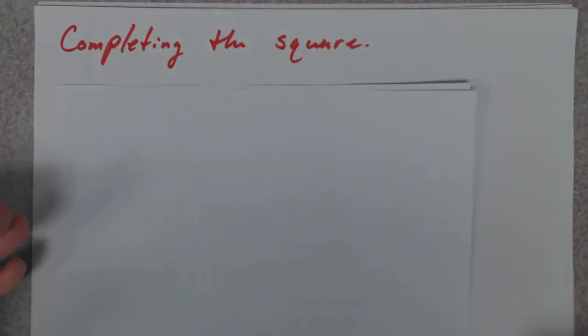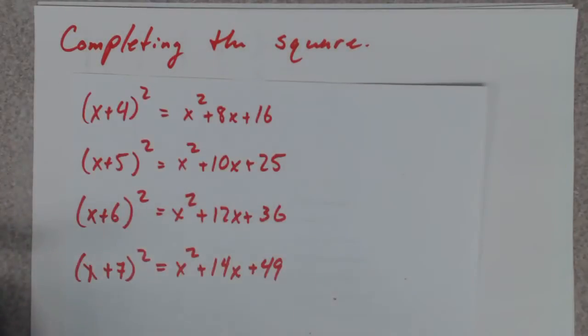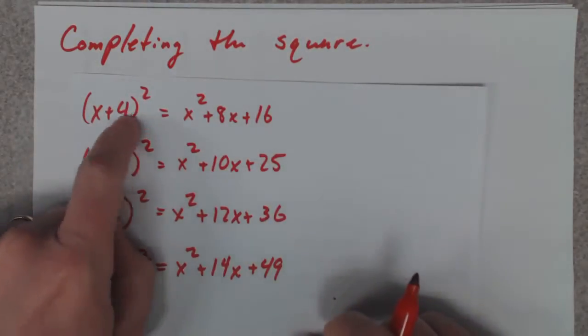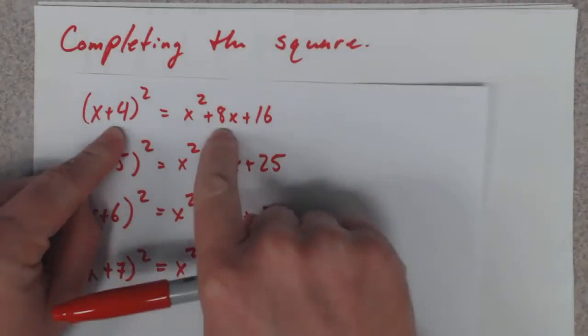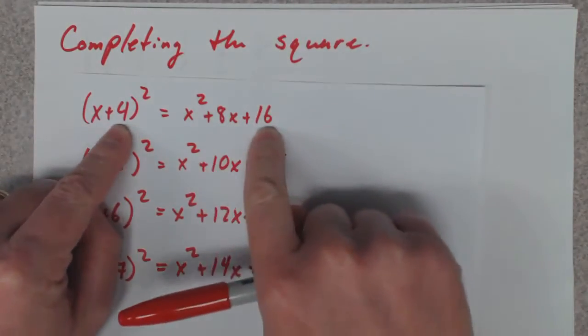When you talk about completing the square, you have to know the shortcut that if it's x plus 4 squared, you double this number to get this guy, and you square this number to get this guy.